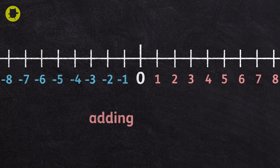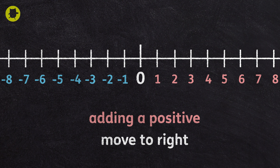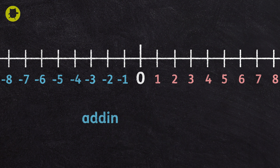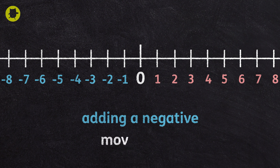If we add a positive to any number, we always move to the right, adding on the number of moves. If we add a negative to any number, we always move to the left, adding on the number of moves.